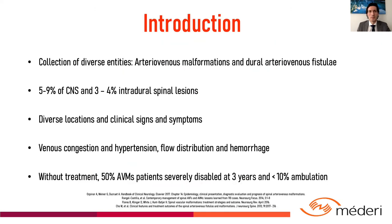Spinal Arteriovenous Malformations are a collection of diverse entities comprising Arteriovenous Malformations and Dural Arteriovenous Fistulae. Even though they are an infrequent pathology, they can have devastating outcomes. The clinical presentation depends on the location of the lesion and its pathophysiology, which is secondary to venous congestion and hypertension, flow distribution, and hemorrhage.